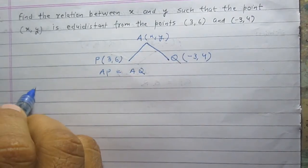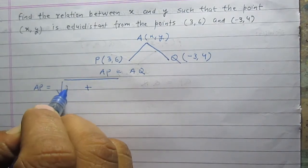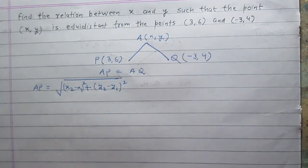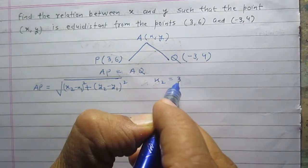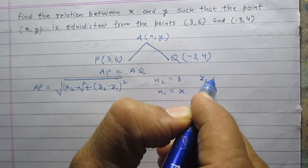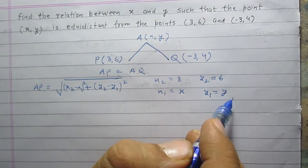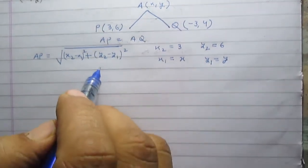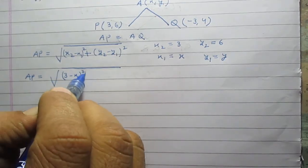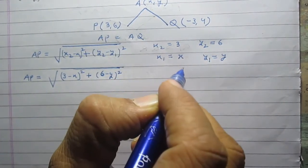Let us find the distance AP using the distance formula. According to the distance formula, distance AP is equal to the square root of (x2 minus x1) whole square plus (y2 minus y1) whole square. Here x2 is the x-coordinate of point P, which is 3; x1 is the x-coordinate of point A, which is x. y2 is the y-coordinate of point P, which is 6, and y1 is y, the y-coordinate of point A. After substituting these values in the formula, we get AP equal to the square root of (3 minus x) whole square plus (6 minus y) whole square.